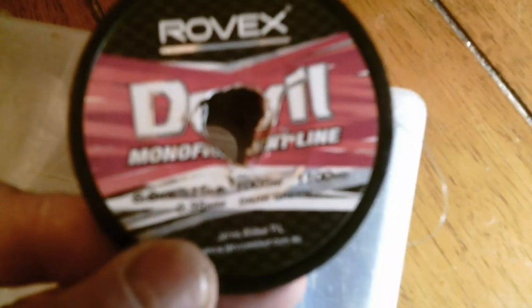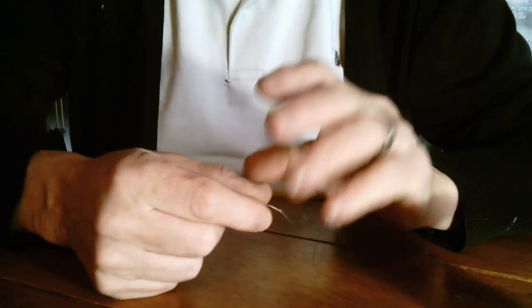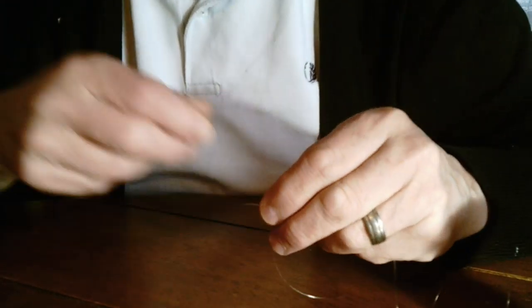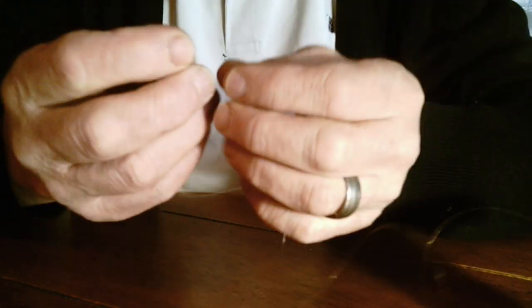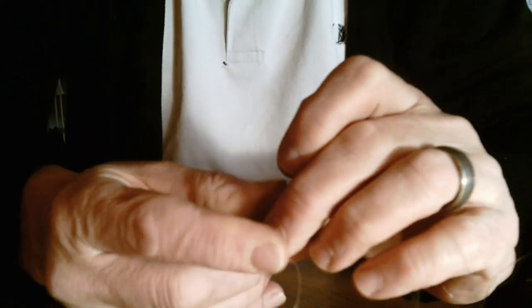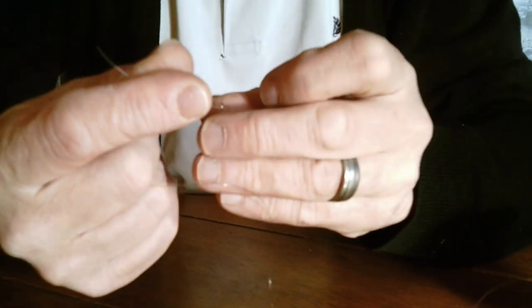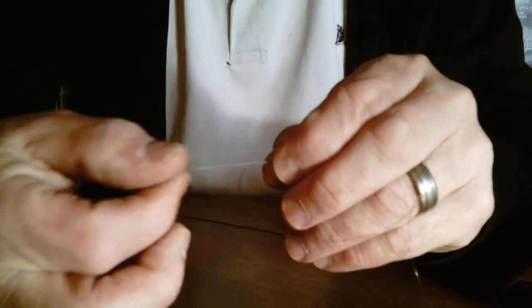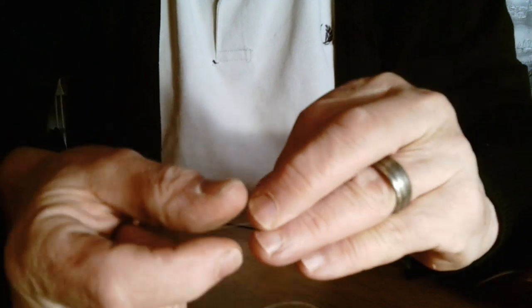And I'm going to use some fluorocarbon for my snood and I'm using this to make the rig out. So I'm going to start off by making the little drop down from the float. So we'll start with a little swivel. I'm using a uni knot again.